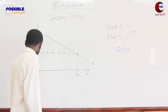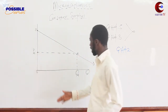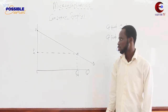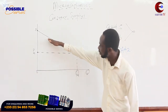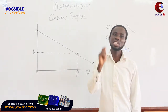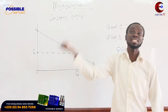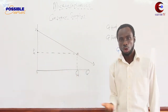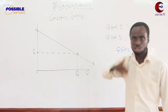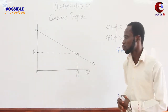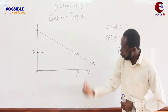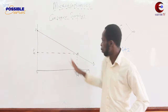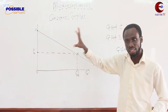Now look at the diagram. We can use a diagram to explain Consumer Surplus. This is a demand curve. As soon as we hear Consumer Surplus, make reference to the Demand Curve. And when you hear Producer Surplus, you make reference to the Supply Curve. Consumer corresponds to Demand, so Consumer Surplus is worked on the Demand Curve.